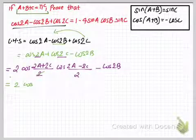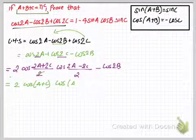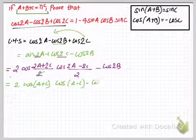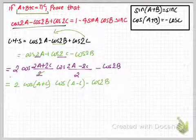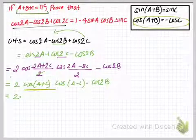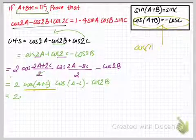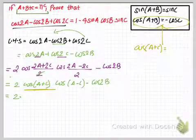After applying the formula and cancelling numerator and denominator, I have cos(A plus C) times cos(A minus C) minus cos(2B). Now instead of cos(A plus C), from our condition we can write cos(A plus C) is equal to minus cos B.